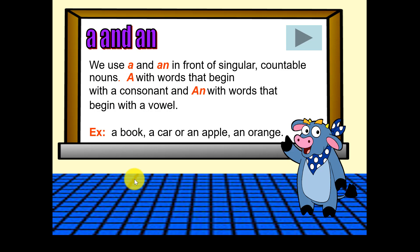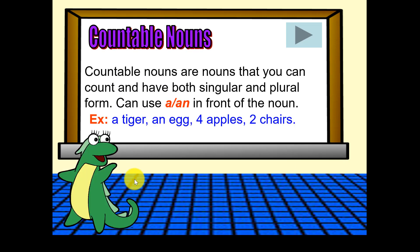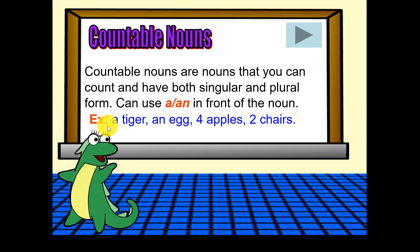Let's move on to the next rule. We'll talk about countable nouns. Those are nouns that you can count — you can add one or two or three in front of them, and they have both a singular and plural form. For example, you can say a tiger, an egg. We can count those: four apples, two chairs.